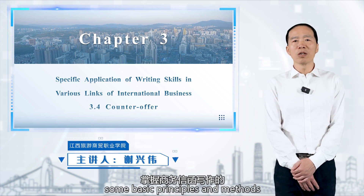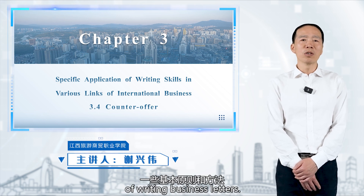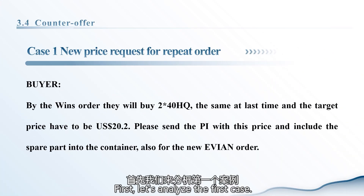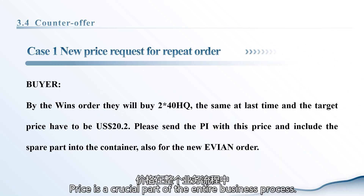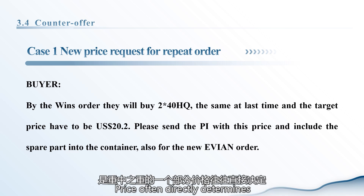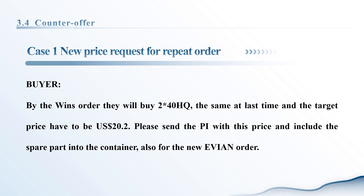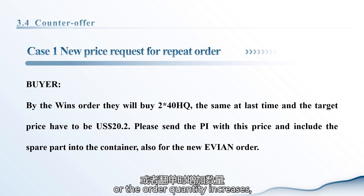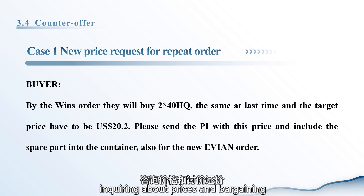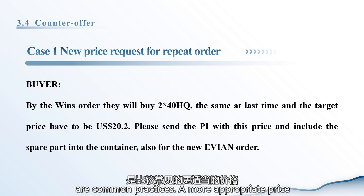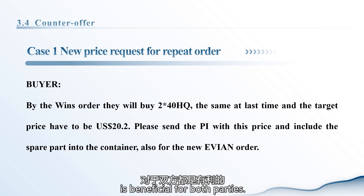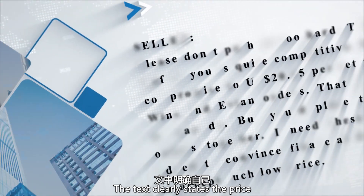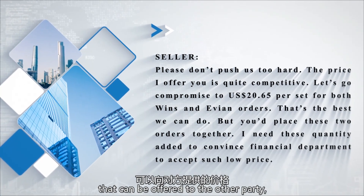First, let's analyze the first case. Price is a crucial part of the entire business process — price often directly determines whether an order is completed. If the interval between client reorders is more than a month, or the order quantity increases, inquiring about prices and bargaining are common practices. A more appropriate price is beneficial for both parties. The text clearly states the price that can be offered to the other party.